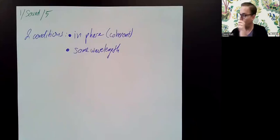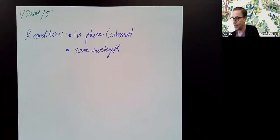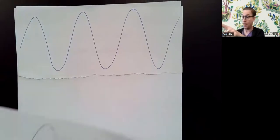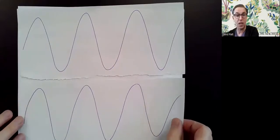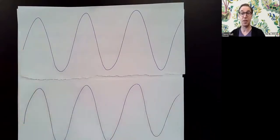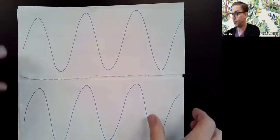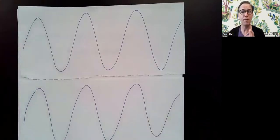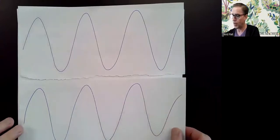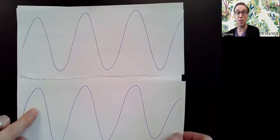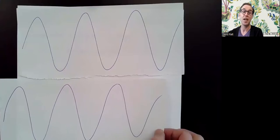Now, with two waves meeting those conditions, if both speakers send sound to me from the same distance, we have constructive interference — this sound plus this sound gives louder sound. But what if one speaker is a little farther away? The wave from that one has to travel farther to reach me, which means it arrives a little behind.